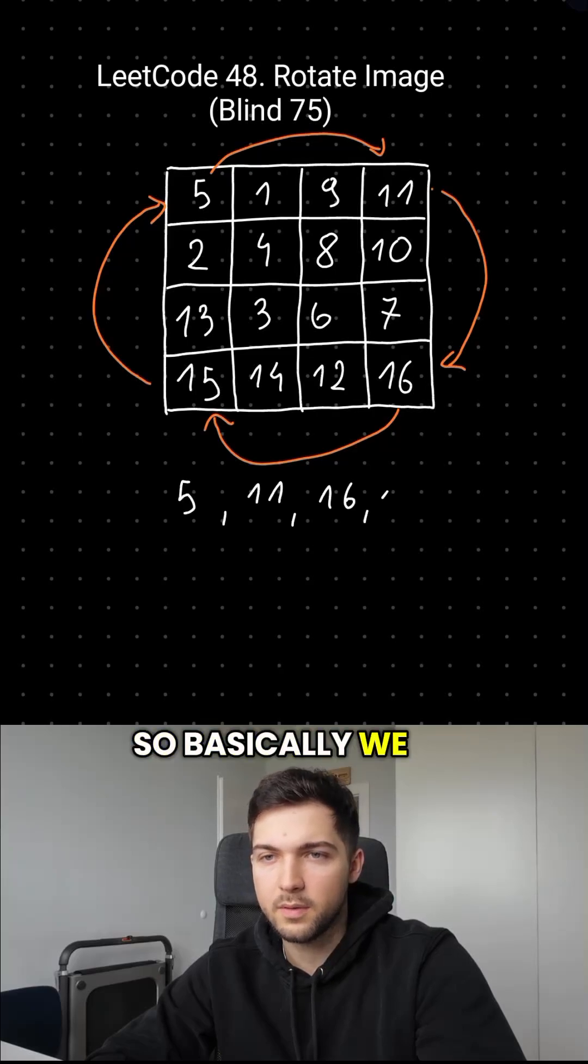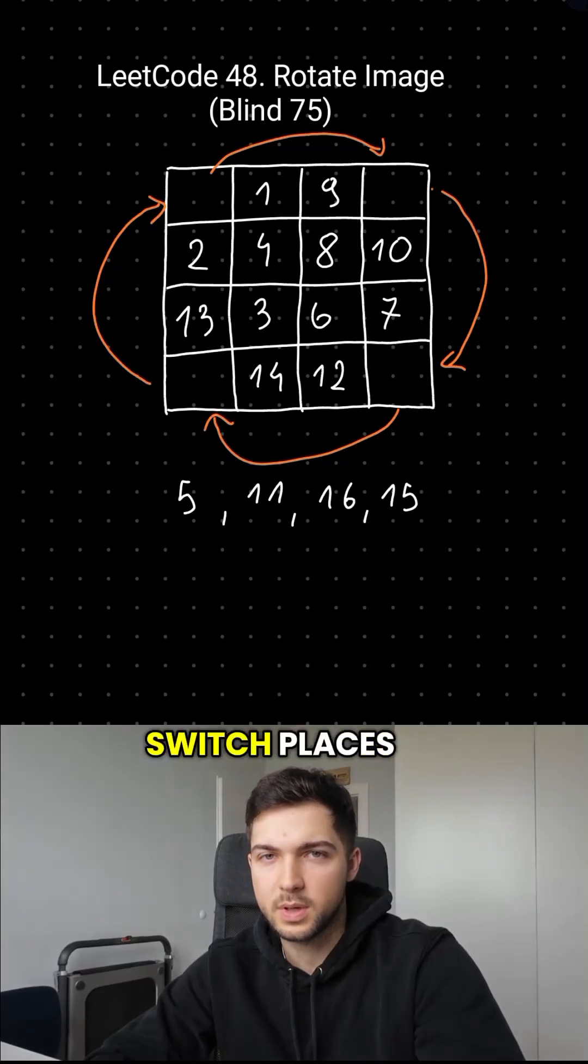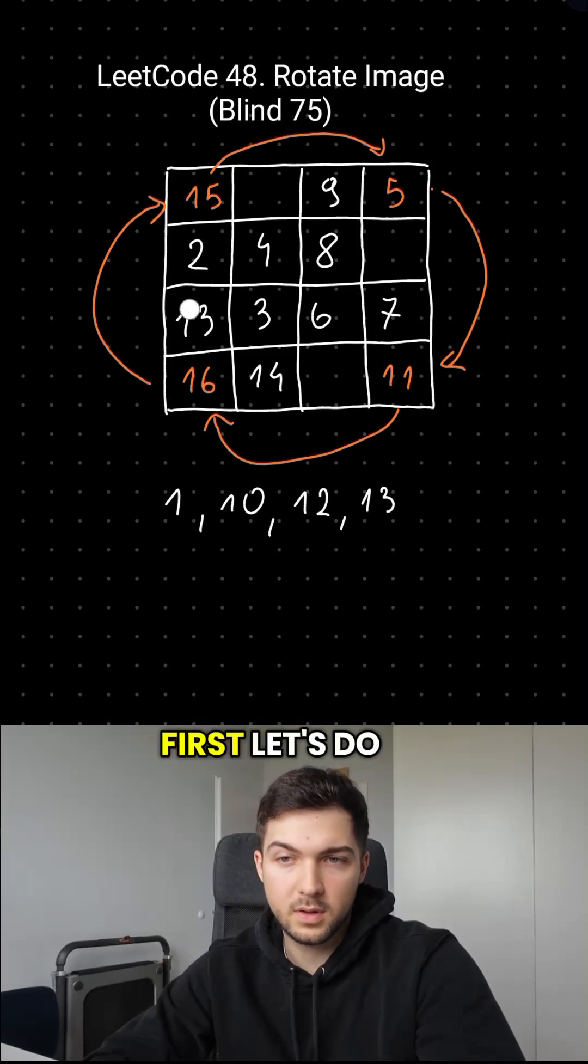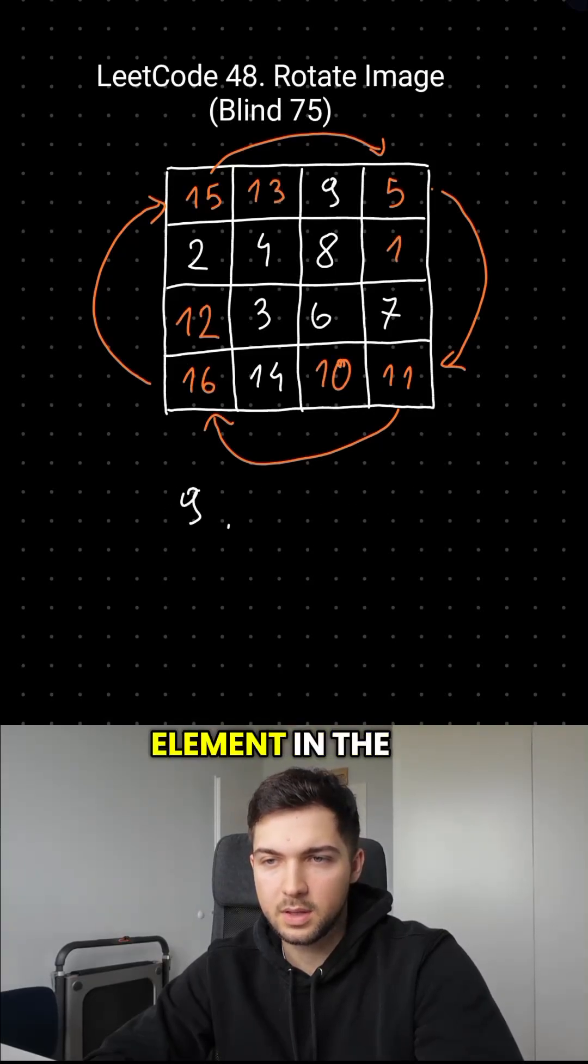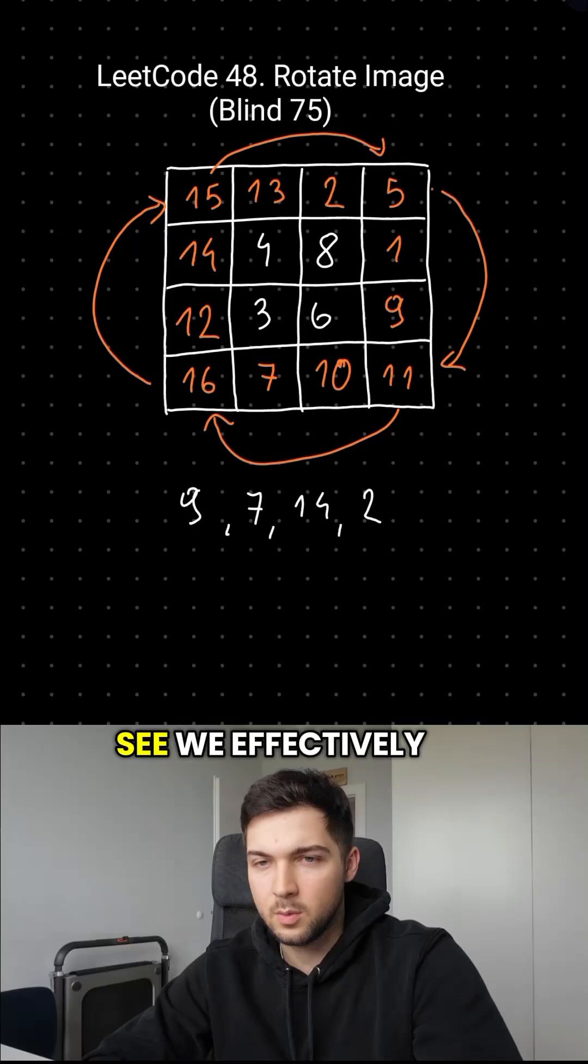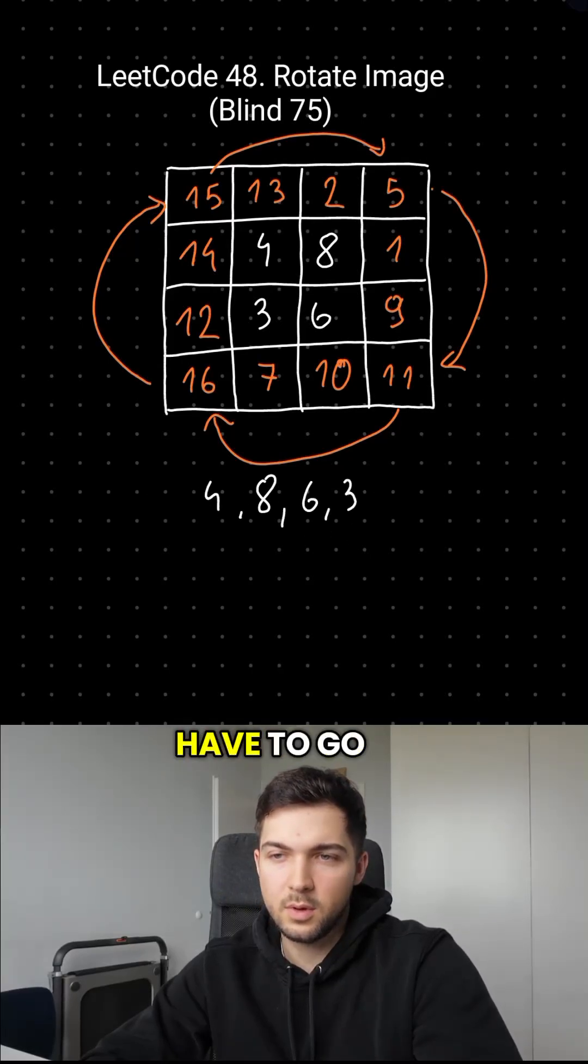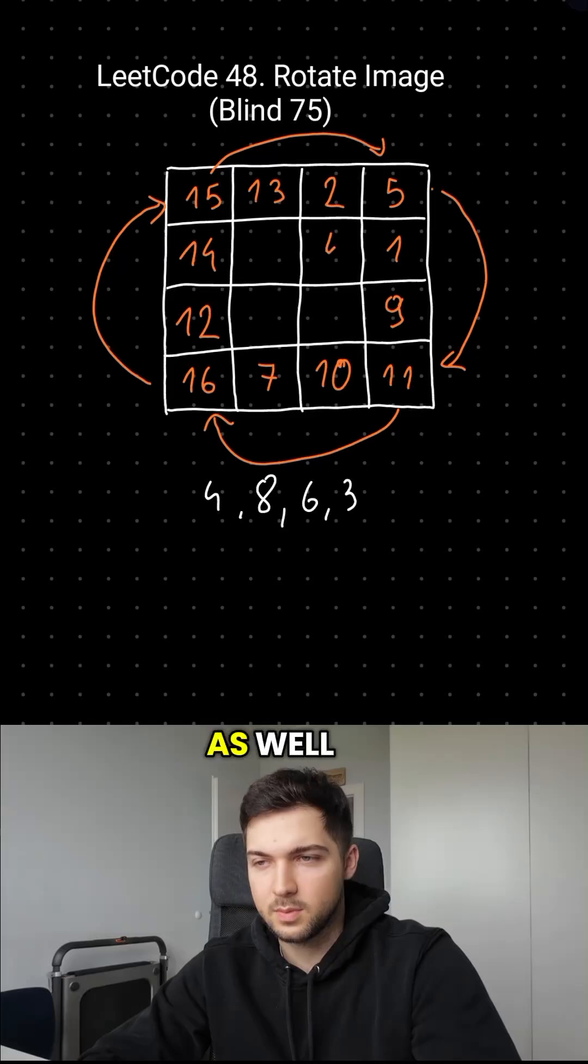So basically we have four elements that have to switch places and we need to repeat that for every element. First, let's do that for each element in the first row. As you can see, we effectively rotated the outer layer. Now we just have to go layer by layer and rotate them as well.